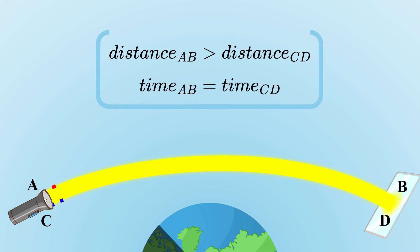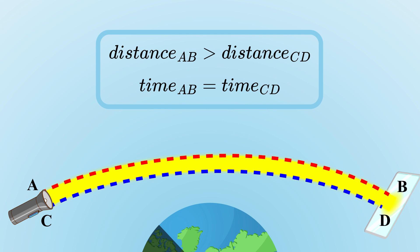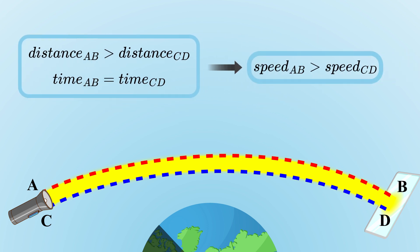This means it took the same amount of time to travel from A to B as it did from C to D, even though the path from C to D is shorter. Therefore, photons along the lower path had to travel slower.